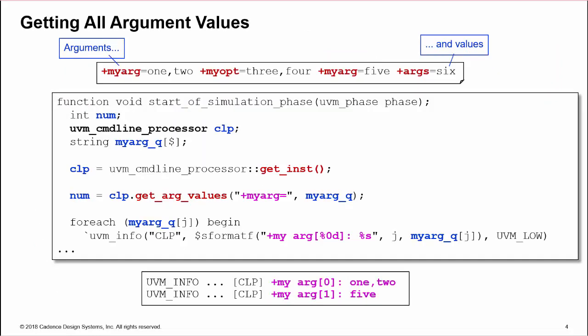We can read all the values of an argument in one call. When reading multiple arguments, the argument values will be extracted into string queues, so we define these. Then we get the current CLP instance into a local handle.